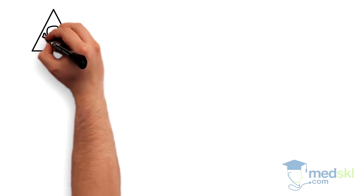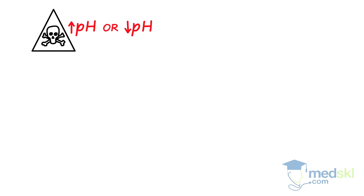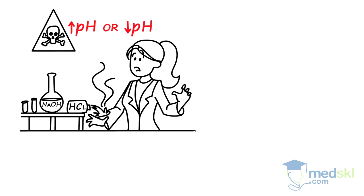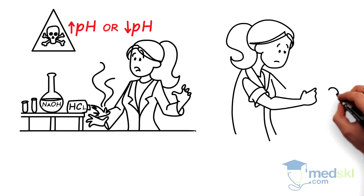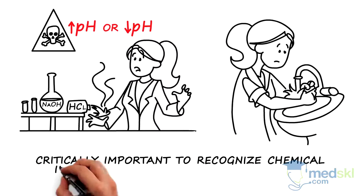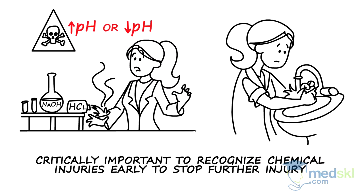Chemical burns are caused by substances that are either basic or acidic. These substances disrupt cellular membranes, resulting in cellular dysfunction, leakage and ultimately cell death. It is critically important to recognize chemical injuries early in order to stop further injury through decontamination.